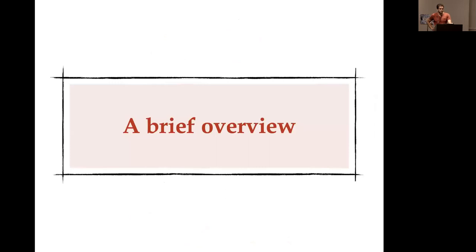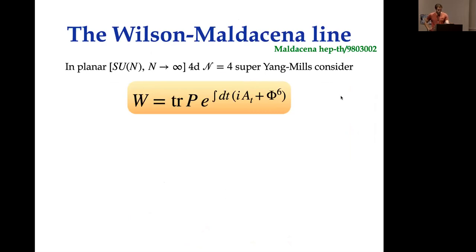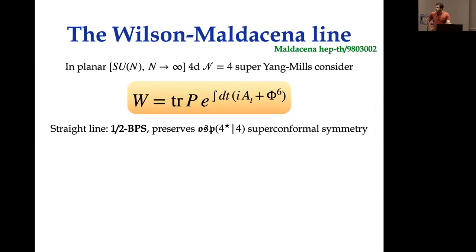I will start by giving a brief overview of this setup, which was also discussed by Andrea on Tuesday. The idea is to consider a special supersymmetric Wilson line in N=4 super Yang-Mills, where we couple the gauge field along the Euclidean time direction and also one of the six fundamental scalars. We are working in the planar limit, so SU(N) gauge group with infinite N. This is also known as the Wilson-Maldacena line, and when straight or circular it preserves half the supersymmetries of N=4.